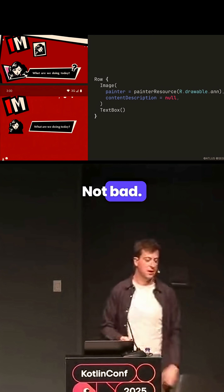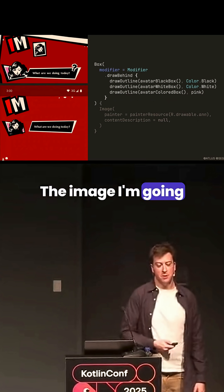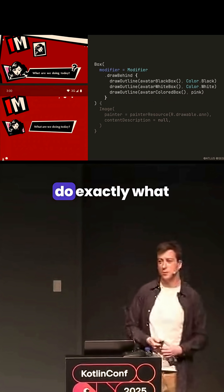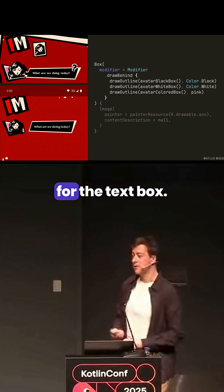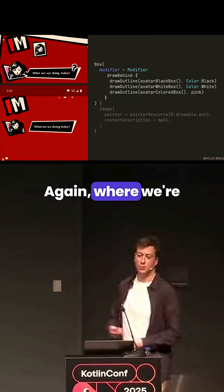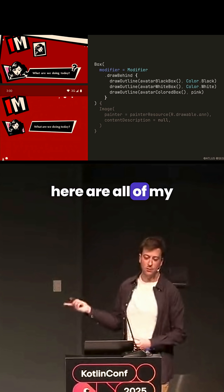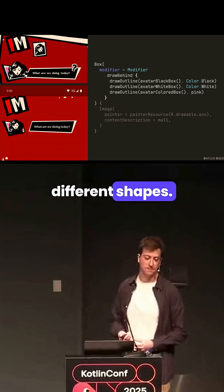What does it look like? Not bad. The image I'm going to place inside of a box, and here we'll do exactly what we're doing for the text box again, where we're saying draw behind. Here are all of my different shapes.